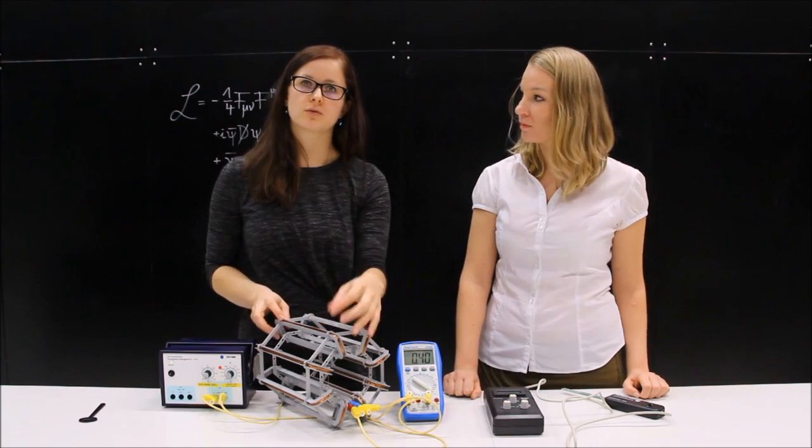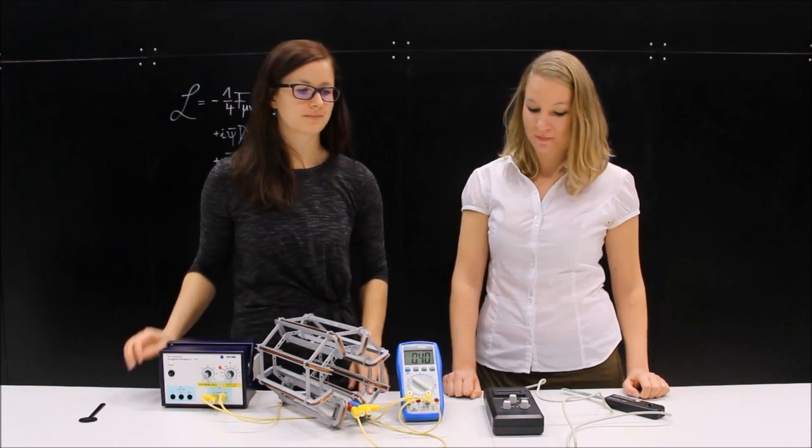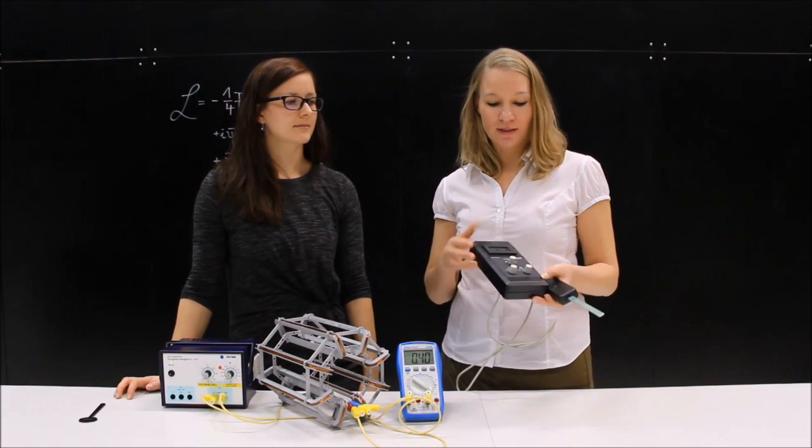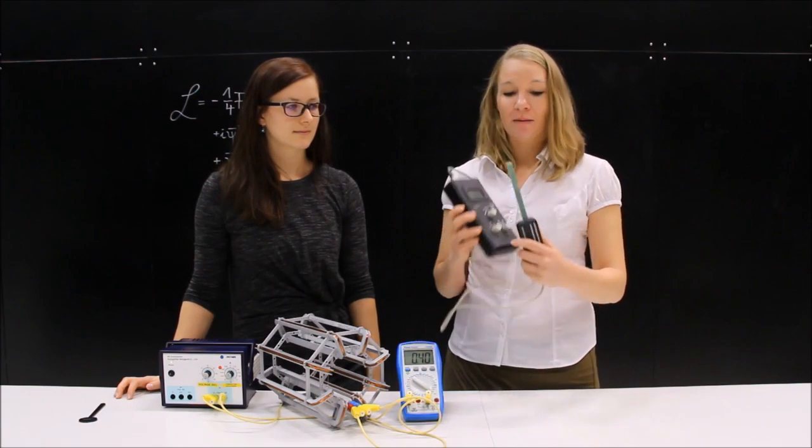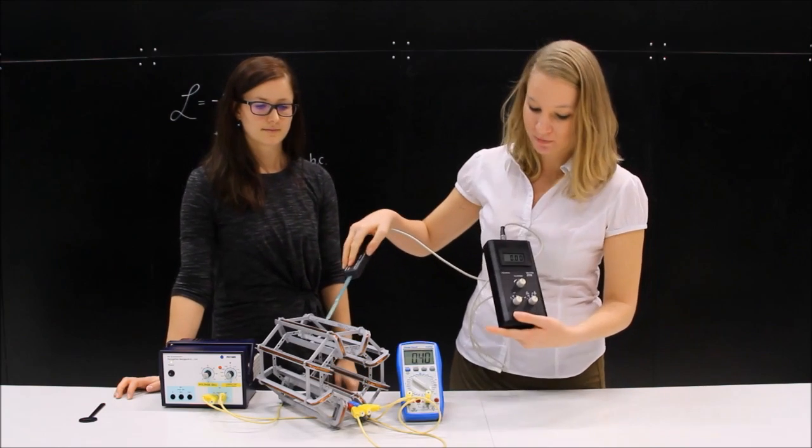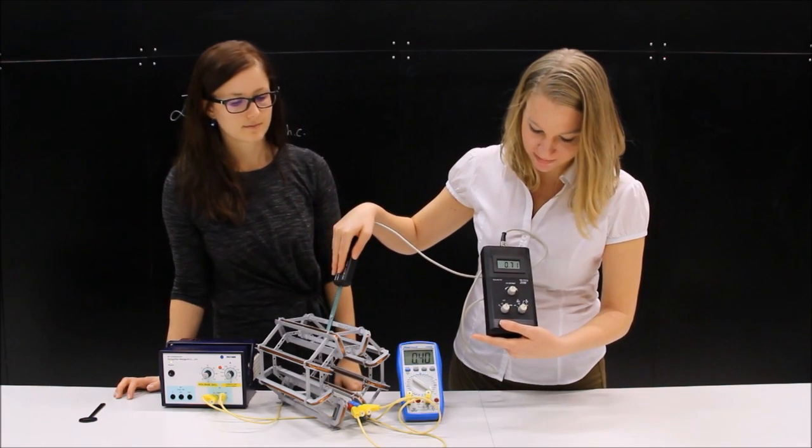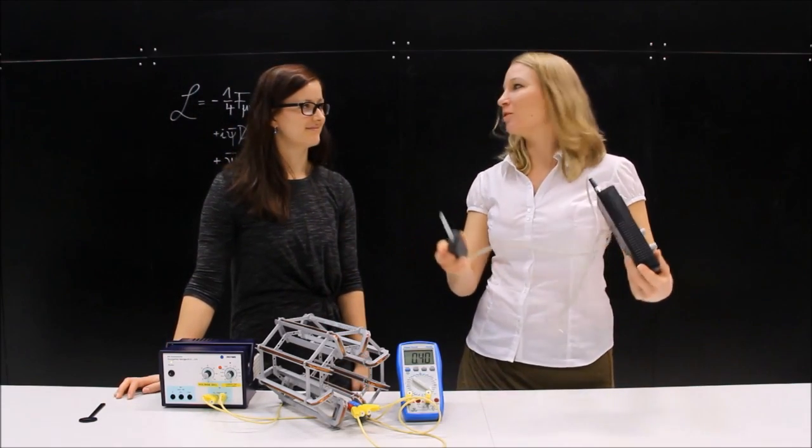So once we have current going through coils, we should be able to measure a magnetic field. The strength of a magnetic field you can measure, for example, with a hall probe. So, our device looks like this. It has a sensor here. And if I go with the sensor into the magnetic field of our model, it can measure 0.7 millitesla. Quite good.